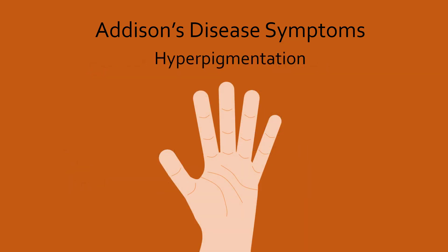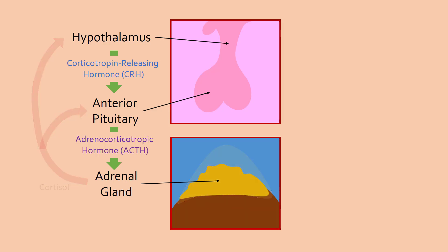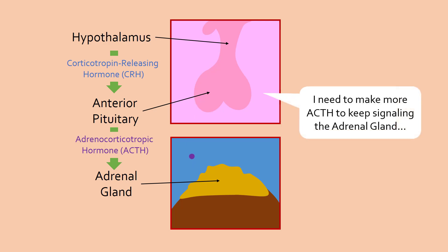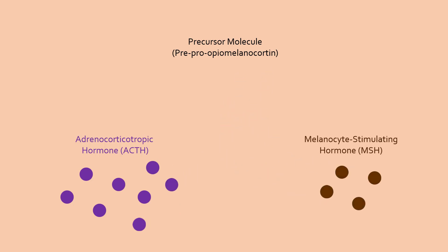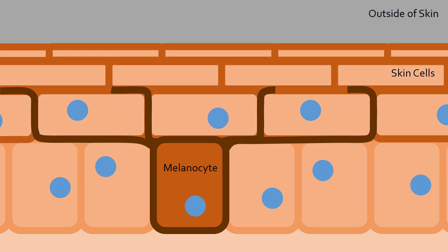The most interesting symptom is darkening of the skin, called hyperpigmentation, particularly in old scars, creases in the hands, and the inside of the mouth. With damaged adrenal glands, the anterior pituitary constantly releases ACTH in hopes of causing cortisol release, but to no avail. Constant ACTH release requires more of its precursor molecule, which can also be converted into melanocyte-stimulating hormone, or MSH. MSH stimulates melanocytes — octopus-looking cells underneath the skin — which when activated produce a dark pigment called melanin, causing the skin to darken as if you got a tan.